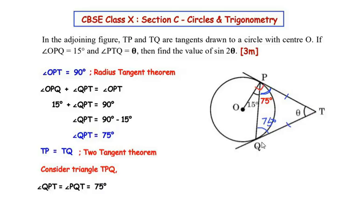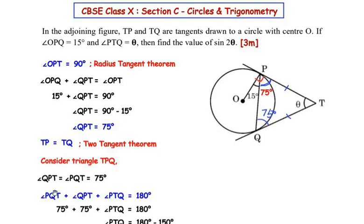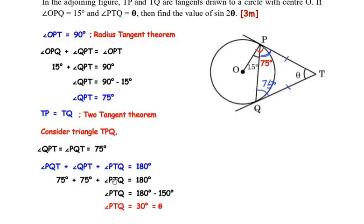Using the angle sum property of the triangle, angle PQT plus angle QPT plus angle PTQ equals 180 degrees. Substituting the values: 75 plus 75 plus angle PTQ equals 180 degrees. Since 75 plus 75 gives 150, taking 150 to the other side we get angle PTQ, that is theta, equals 180 minus 150, giving us theta equal to 30 degrees.